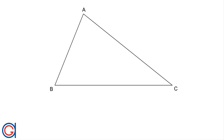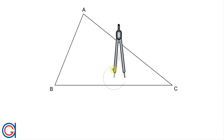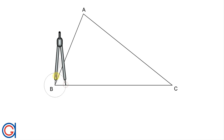It is located at the intersection point of the perpendicular bisector of each of the three sides of the triangle. So now to locate this circumcenter point we are going to work out the perpendicular bisector of the sides A, B and C.